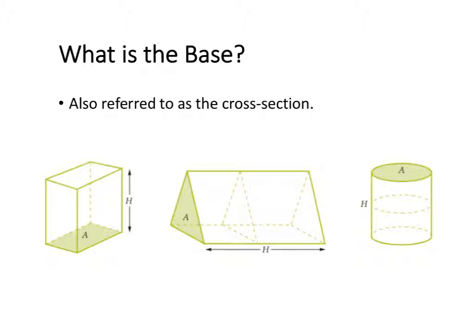A key component of calculating the volume of a prism is being able to identify the base. The base is also referred to as the cross-section of the shape. We call it the cross-section because no matter where you cut it along the shape, the cross-section should be the same if you are cutting into the base of the shape.